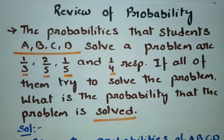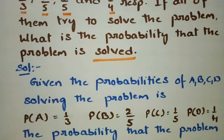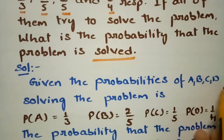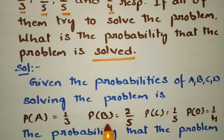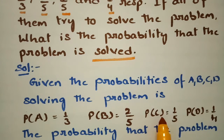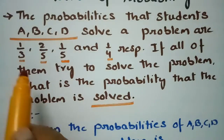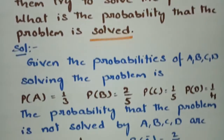What is given? The probabilities of A, B, C, D solving the problem: P(A) = 1/3, P(B) = 2/5, P(C) = 1/5, and P(D) = 1/4. These are taken directly from the question.